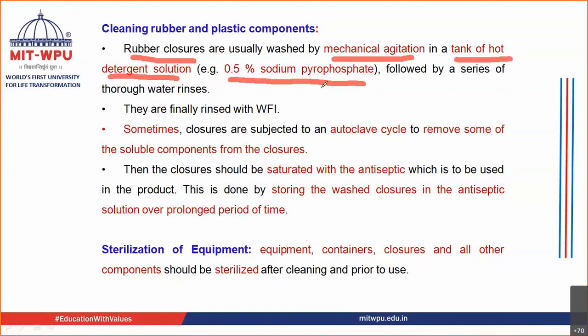The hot detergent solution used is 0.5% sodium pyrophosphate. You prepare this solution, put it in the tank, heat it a little bit, put your rubber closures inside, and carry out mechanical agitation. After removal from the detergent, the final rinse is done with water for injection.